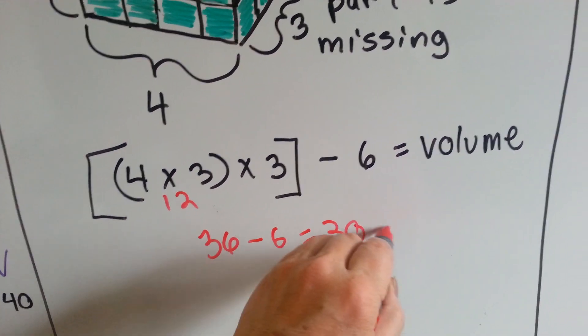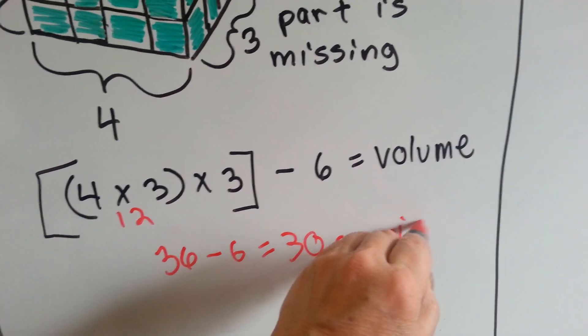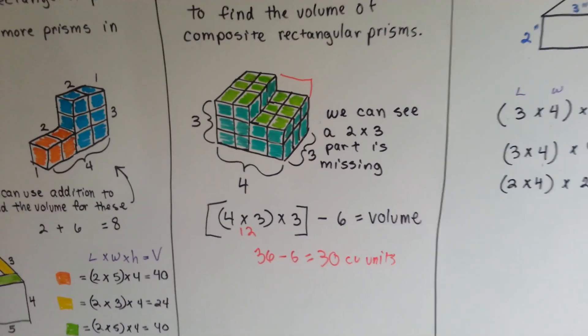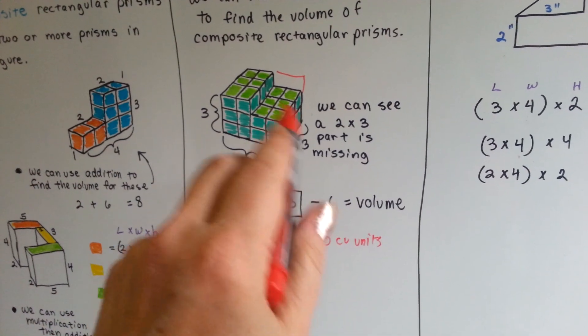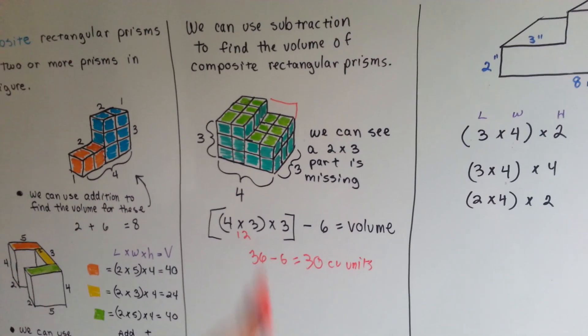So we know the volume is 30 cubic units. Again, I didn't specify it was inches or centimeters or whatever. It's just units. They're blocks. So we can use subtraction.